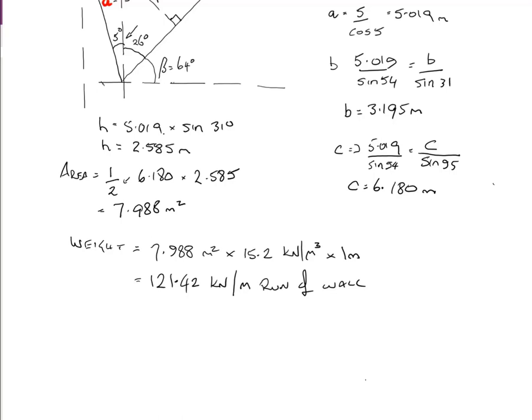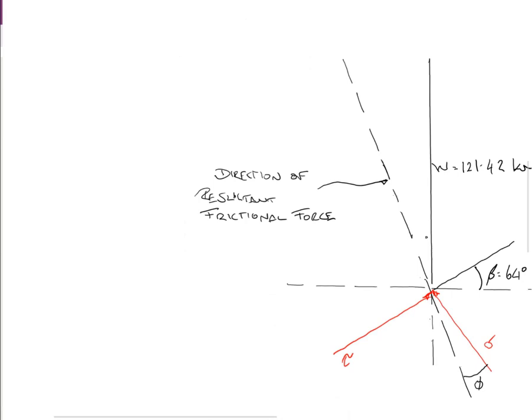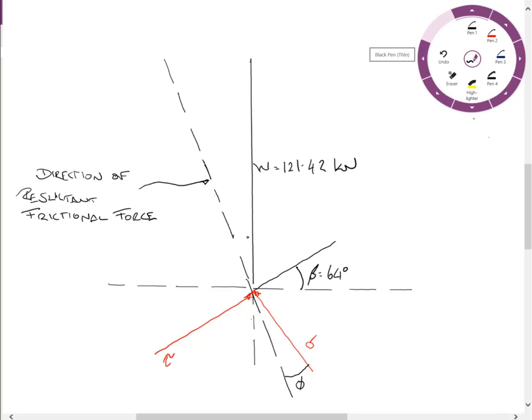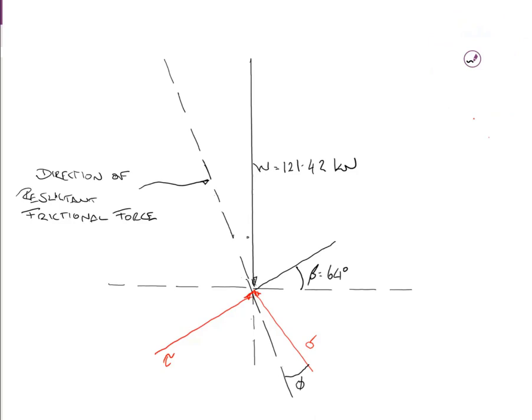Okay, so you've been asked to solve this using graph paper and scale drawing, I think as well as using trigonometry. It's a bit hard for me to do it on graph paper to scale, but you're just going to have to use a little bit of imagination here, and I've made a bit of a start on it. We start, we know W, it's at 121.42 kilonewtons per meter run of the wall. Draw crosshairs at the bottom of the W value. Draw the trial failure surface.